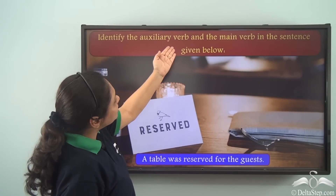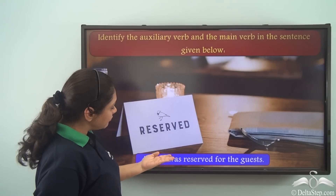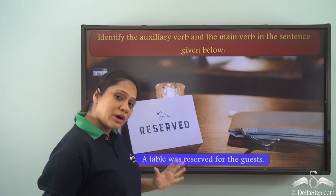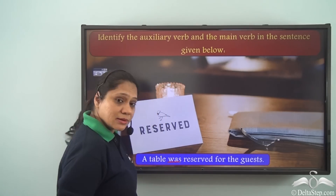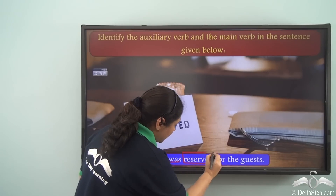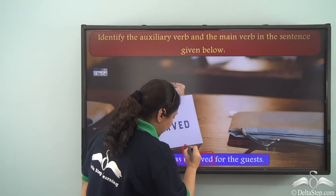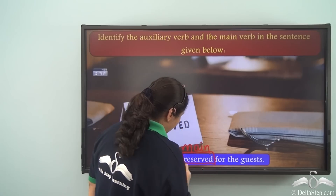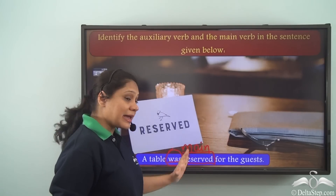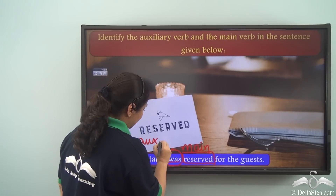Identify the auxiliary verb and the main verb in the sentence: 'A table was reserved for the guests.' The verbs in this sentence are 'was' and 'reserved.' 'Reserved' is the main verb because it is showing us the main action of the sentence. 'Was' is a helping verb — it is telling us the time that the main action is happening. Hence 'was' is an auxiliary verb here.